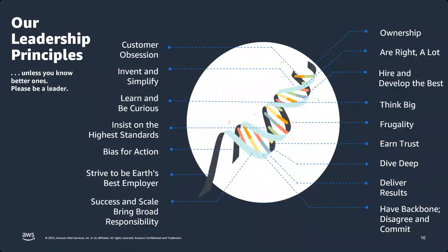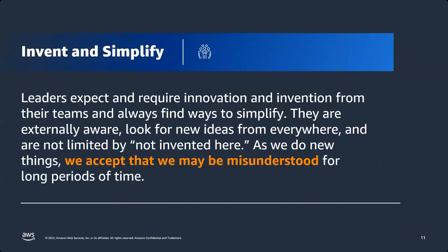For example, if today we are running Netflix on our platform, this brings more responsibility. Imagine if we're running education systems, medical, healthcare, space — whatever it is, this brings more responsibility. So the more successful we are and the more we scale, the more responsibility is on us to make services available and scalable. We also invented many things and embraced simplification — we accept to be misunderstood. This first version of Kindle is an example of that.